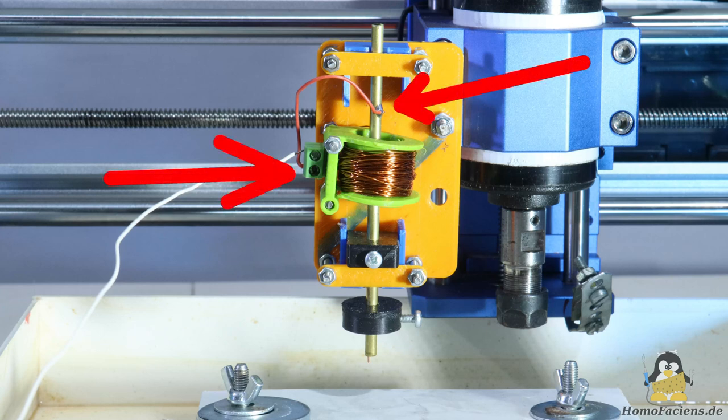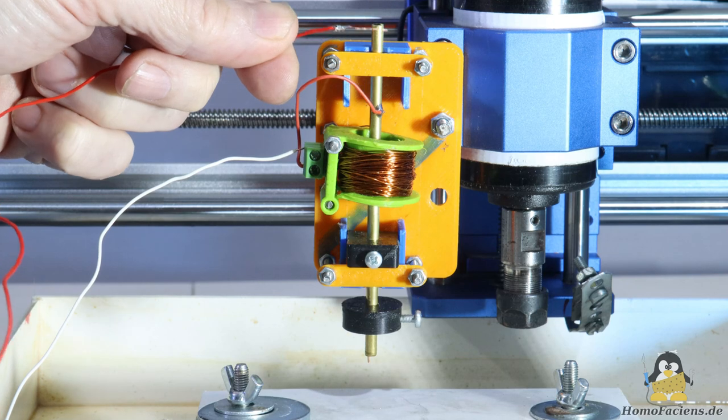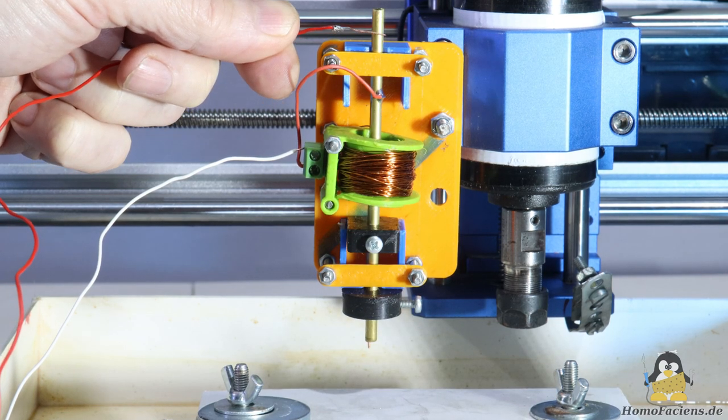The trick is to let the current through the coil flow via this hammer so that it acts as a breaker switch for the coil. If voltage is now applied to the hammer, the electromagnet is activated.